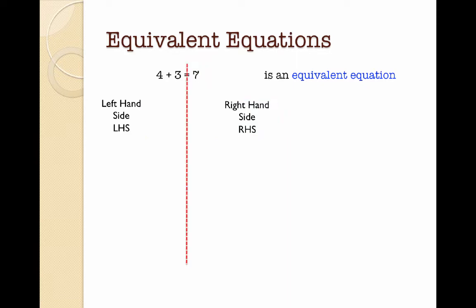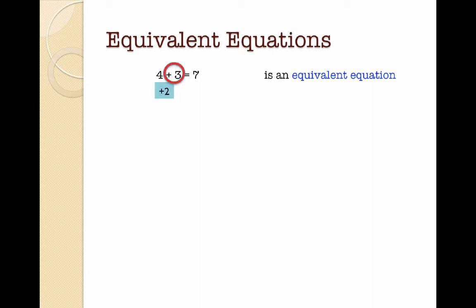Sometimes I'll draw a little dotted line underneath my equal sign just so you can see the left hand side and the right hand side. Now, 4 plus 3 equals 7 is an equivalent equation. What I want to do is see what happens when I add 2 to that 3. So instead of 4 plus 3, I want to do 4 plus 5. Well, 4 plus 5 equals 9 — that's not 7, so I've changed the 7 as well, adding 2 to it. I've added 2 to the left hand side and 2 to the right hand side to create an equivalent equation.